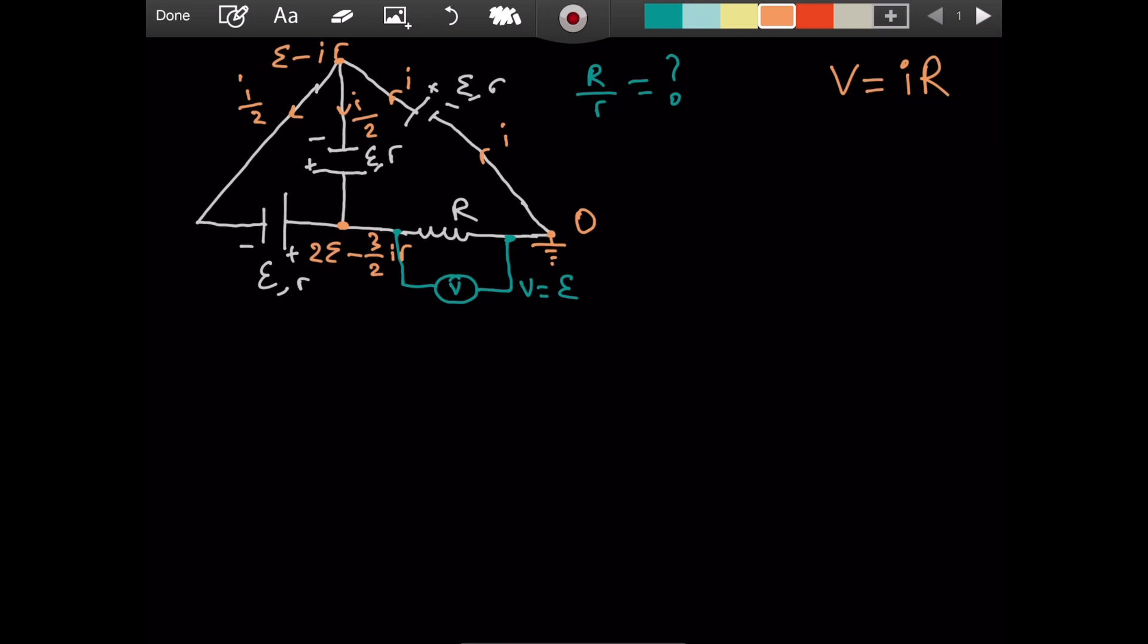Cool. Now we're told by the question, the electric potential difference between, let's say, point A and point B. Well, how was it? VA minus VB is equal to epsilon. This is told by the question. All right? And what is VA? It is, we just found it, 2 epsilon minus 3 over 2 iR.